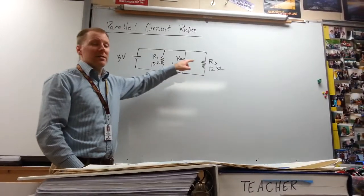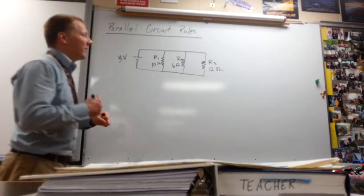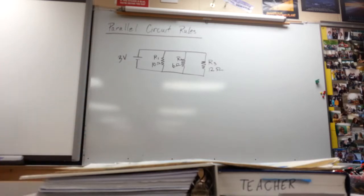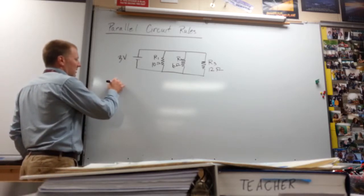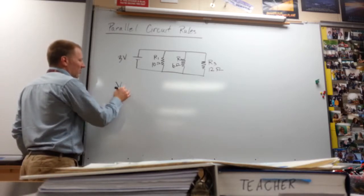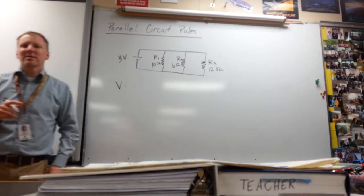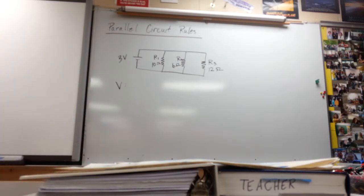We've got three rules just like we saw with series circuits: one on voltage, one on current, one on resistance. So let's talk about voltage first. What did we say about voltage as far as the branch voltages, the battery voltage? What can we say about all of it?